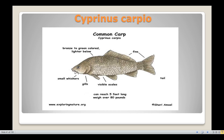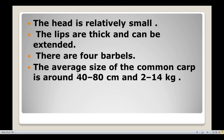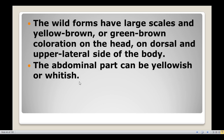The head is relatively small and the mouth is extendable, with small barbels — four in number. The fish averages about 40 to 80 centimetres in size and 2 to 14 kg in weight. The wild forms have large scales and yellow-brown or green-brown coloration on the head.